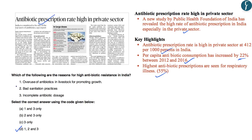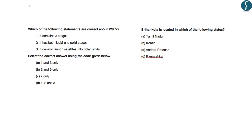The next question: which of the following statements are correct about PSLV? Statement 1 — it contains three stages — is clearly wrong as it has four stages. Statement 2 — it has both liquid and solid stages — is correct. Statement 3 — it cannot launch satellites into polar orbits — is absolutely wrong, as the main purpose of PSLV is to launch low-altitude polar orbit satellites. Hence the correct answer is C: statement 2 only.